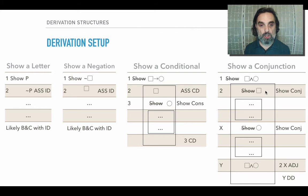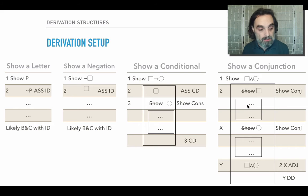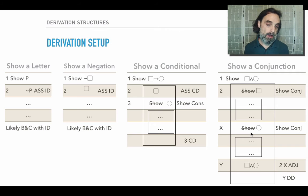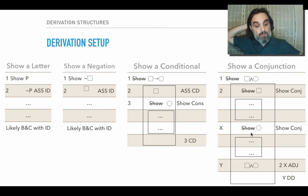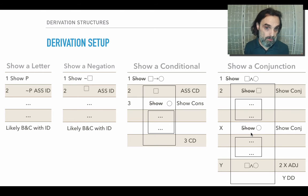So instead, we can proceed immediately to showing the first conjunct. What we do then depends upon what the first conjunct is — maybe it's another conjunction, a conditional, a negation, or a letter. We apply the relevant strategy there and eventually complete that sub-derivation. Having completed that, we're not yet ready to complete the derivation — first we have to do the sub-derivation of the other conjunct. Once we complete both sub-derivations, we put box and circle together using a join and get the conclusion, then apply DD to that line and box and cancel.